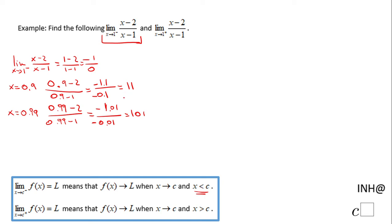That is a numerical way to see this limit behavior. In fact, if you take a look here, this number is getting larger and larger—it's a positive number. So we can say the limit as x approaches 1 from the left of (x - 2) over (x - 1) is positive infinity.